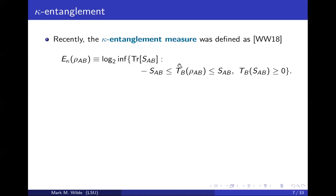Another great thing about this entanglement measure is that it can be computed by a semidefinite program. Semidefinite programming comes up a lot in modern quantum information — it comes up in all subfields including quantum communication, quantum cryptography, quantum complexity theory, and quantum communication complexity. In simple terms, given a mathematical description of the state, you can write a MATLAB program that will calculate the optimal solution in time polynomial in the dimension of the state as well as the inverse accuracy desired. A lot of people in quantum information learn it from the notes of John Watrous, which are very good.